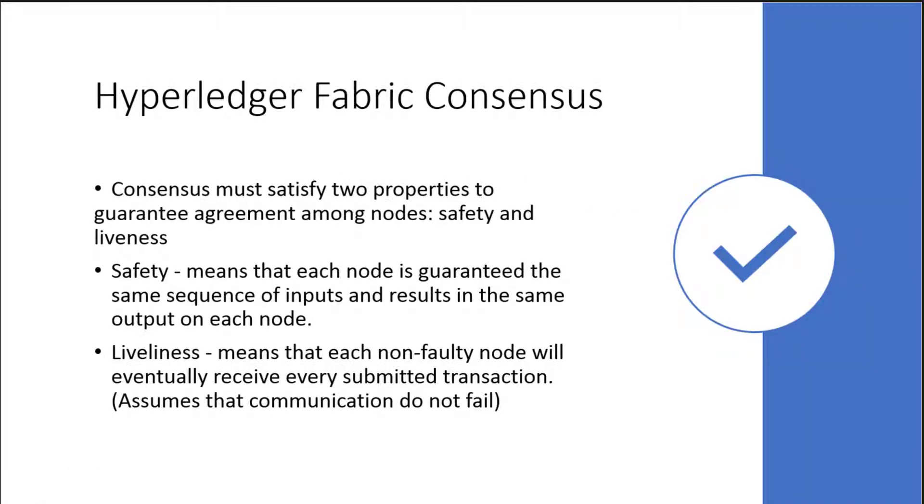Let's discuss consensus. Consensus is basically how all the nodes on the blockchain - whether you have two or 200 - come to agreement that a transaction should occur. When we talk about consensus, it has to satisfy two properties. The first is safety, meaning each node is guaranteed the same sequence of inputs and results as the output on each node - for that transaction to be valid, it has to match up to what was sent with the correct sequence.